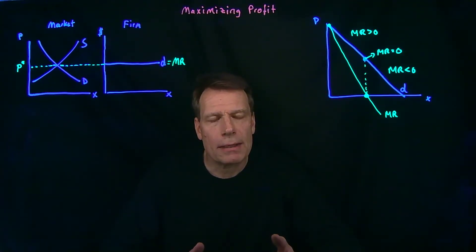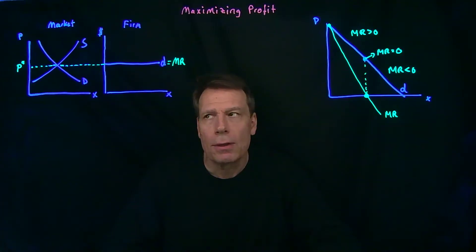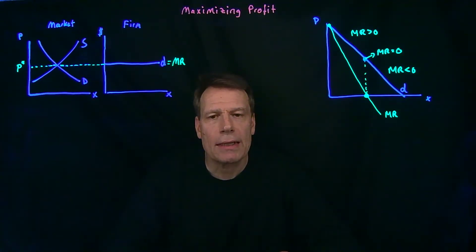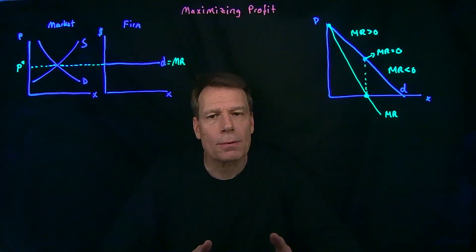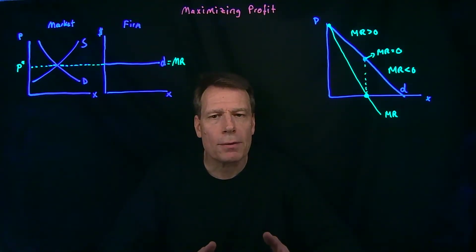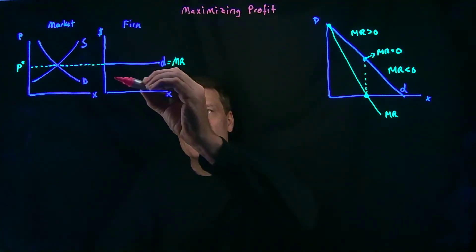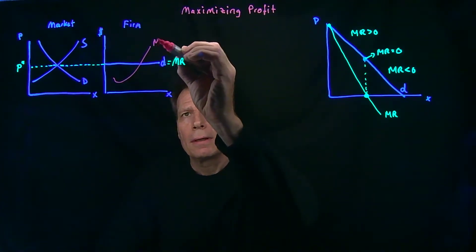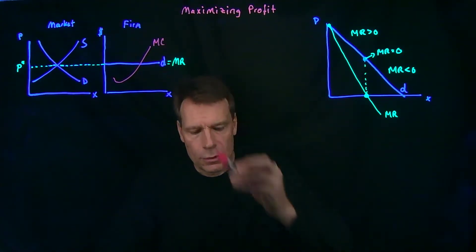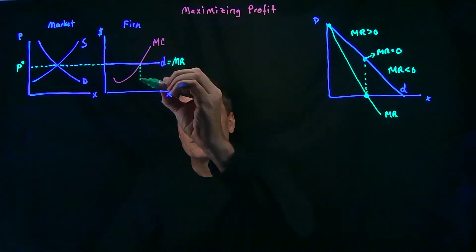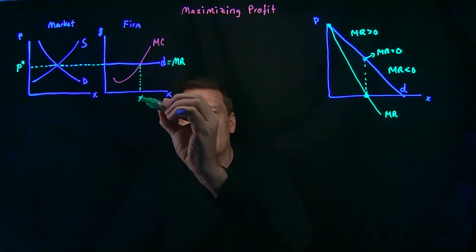We've seen this for perfectly competitive firms, where the price is set in markets and the firm has a perfectly elastic demand curve that's equal to its marginal revenue curve. Marginal revenue is the marginal benefit for firms. The marginal cost of producing is then added to the picture, and firms are going to produce until marginal cost is equal to marginal revenue, so they'll produce this quantity.